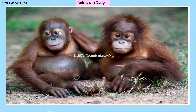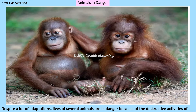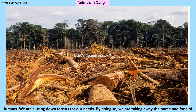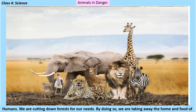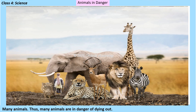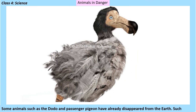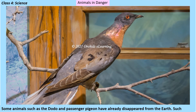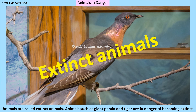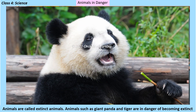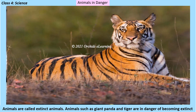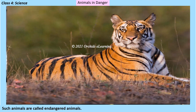Animals in danger: despite many adaptations, the lives of several animals are in danger because of destructive human activities. We are cutting down forests, taking away the home and food of many animals. Some animals such as the dodo and passenger pigeon have already disappeared from the earth — such animals are called extinct animals. Animals such as the giant panda and tiger are in danger of becoming extinct and are called endangered animals.